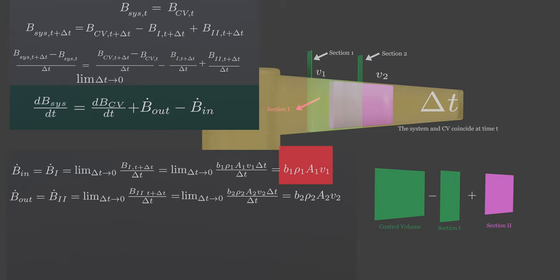Note here, section 1 is plane where a system enters, and section I is small volume where a new system stays in small time delta t. So section I is small part of control volume, and B in is the total flux on this section I.